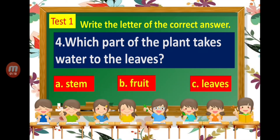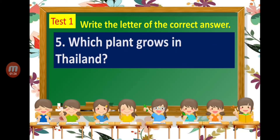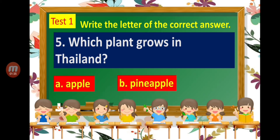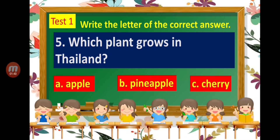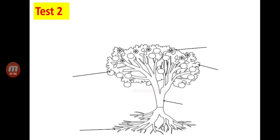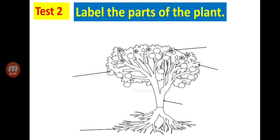Number five: which plant grows in Thailand? A — apple. B — pineapple. C — cherry. Now let's proceed to Test Two.